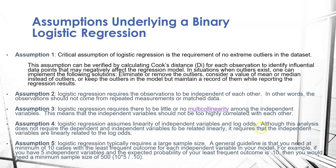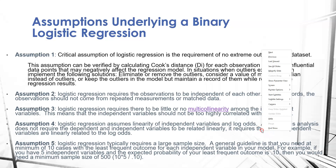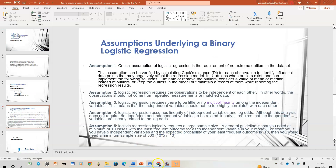Now let's take a look at our assumptions. We have five assumptions and we're going to go over each one. A critical assumption in logistic regression is the requirement of no extreme outliers in the dataset.